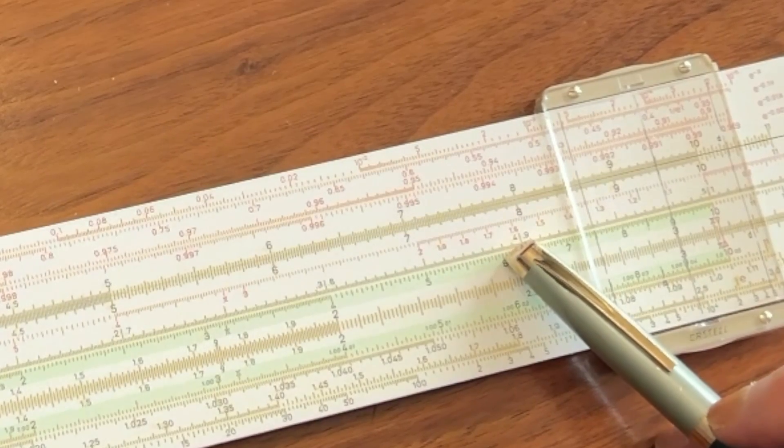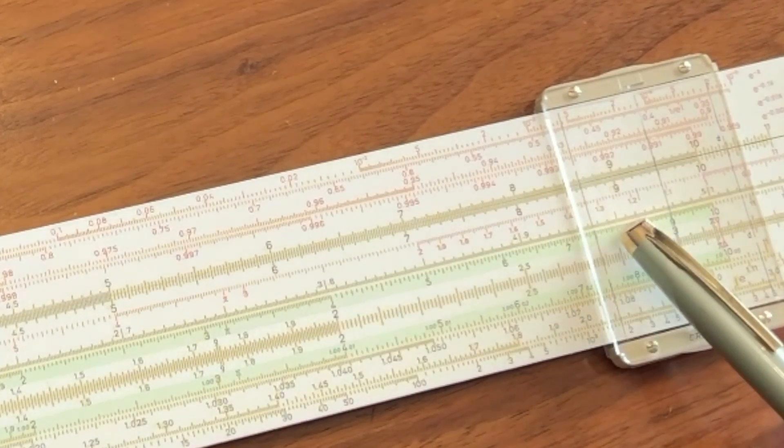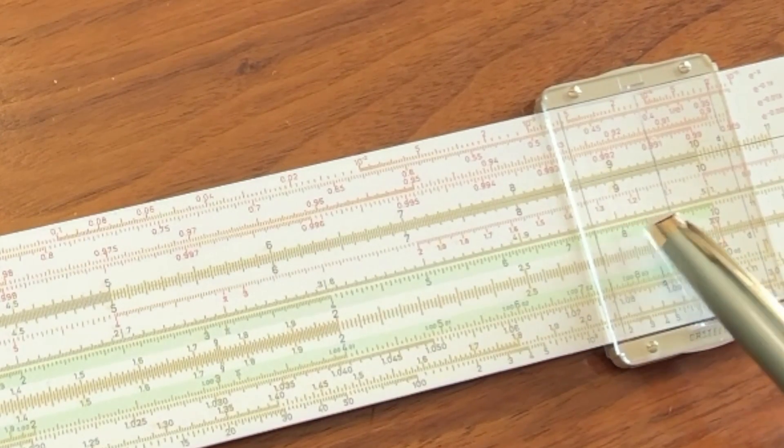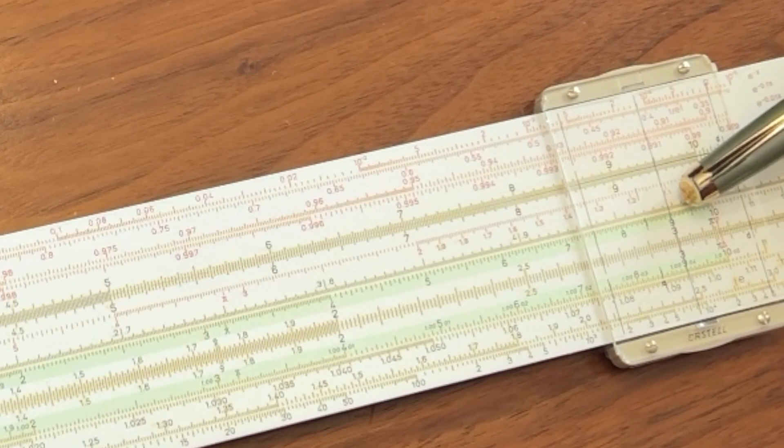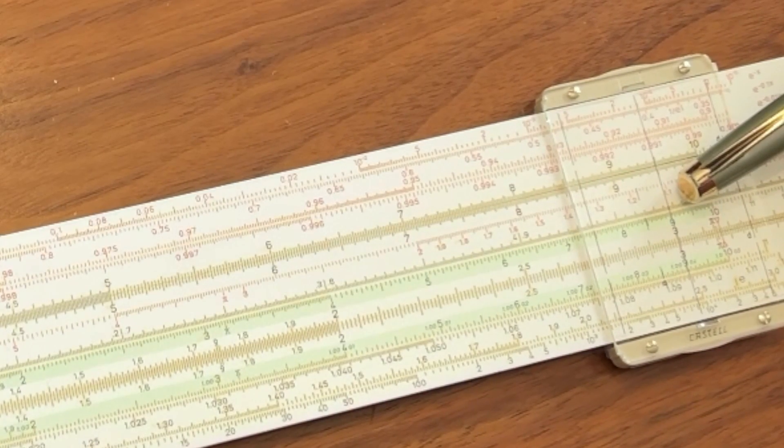Now you notice there's a 0.4 right here. That's 0.4567. That is 0.477. But what if you wanted to get the log of, say, 6?